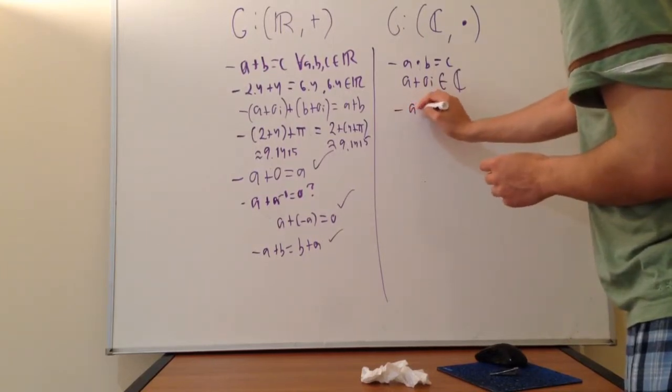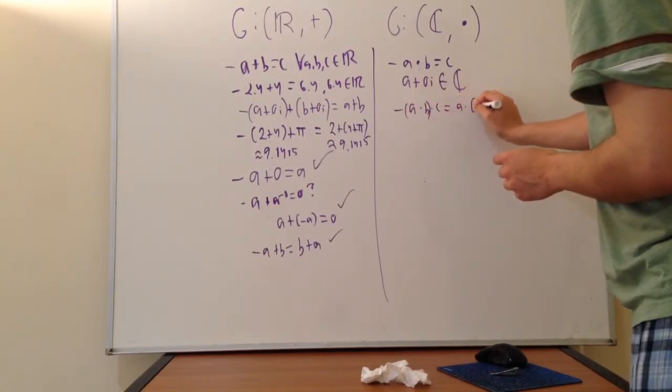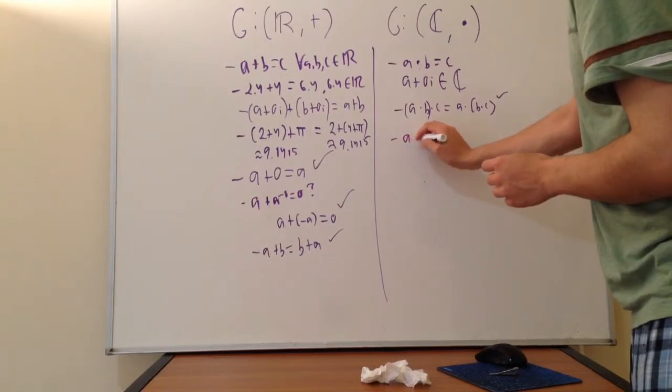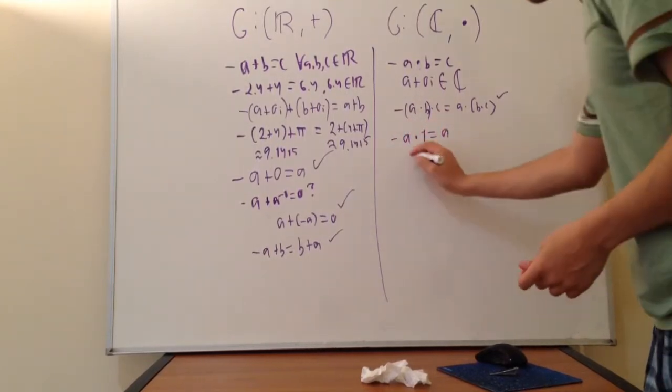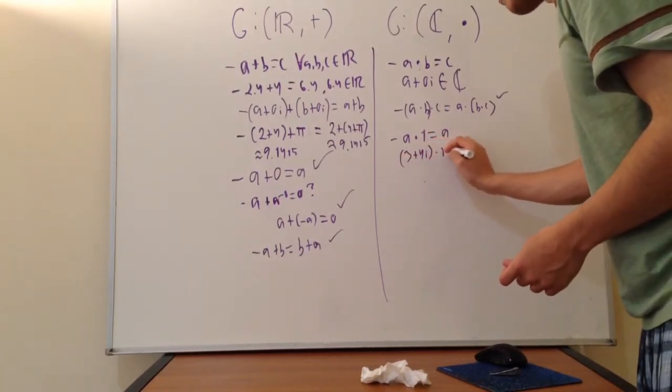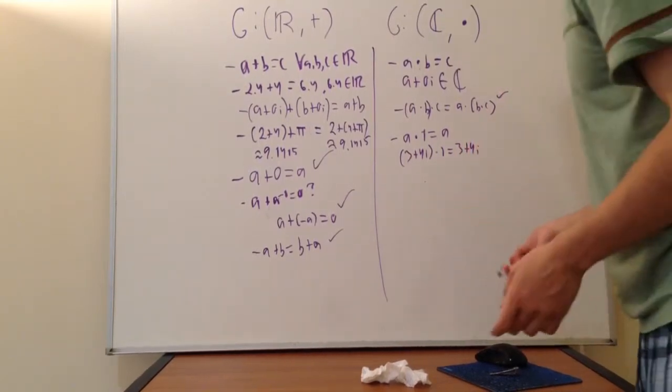You have associativity. A × B × C is the same as A × (B × C). So it's associative. For our identity element, it's going to be 1. A × 1 = A. That makes sense. If we have (3 + 4i) × 1, we're just going to get 3 + 4i.